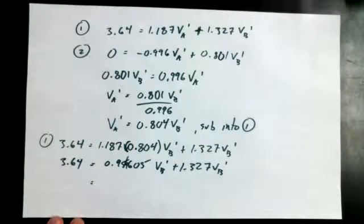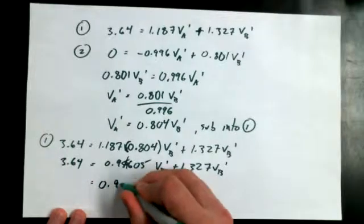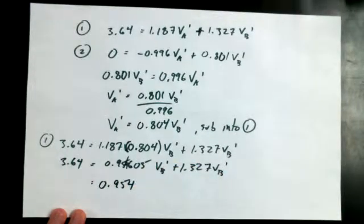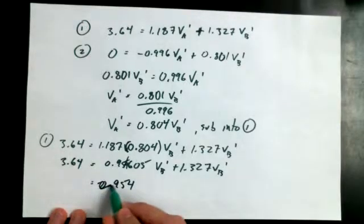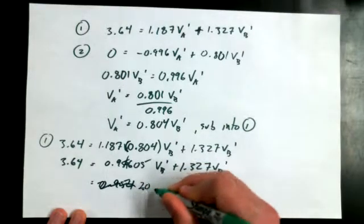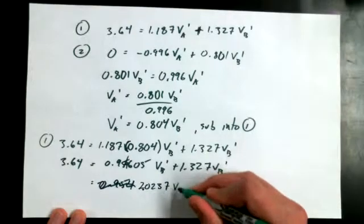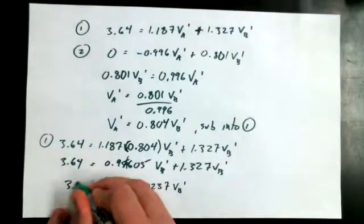I used the original value, not the value. So what do we get for this coefficient, then, on VB-primed? 0.9546. That actually ends up being the coefficient on VB-primed. Oh, no, I did not. 2.0237. 2.0? Yeah, 2.0237. 237, thank you.